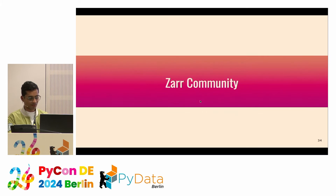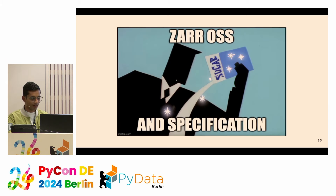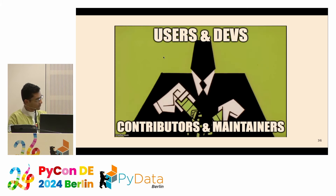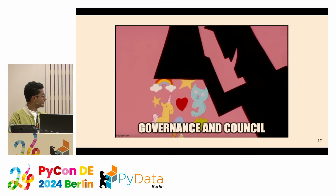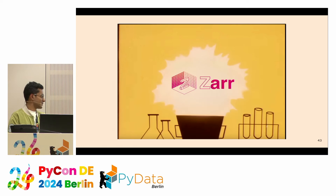Now I want to focus a few minutes on what the community is like and how we reached the point where the v3 specification was accepted by the broader community. In my mind, the community is a mix of the open source software and specification, users and developers, contributors and maintainers, governance and council. Mix them all together and you get something like Zarr.